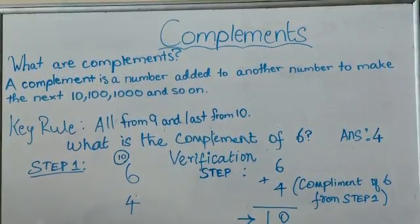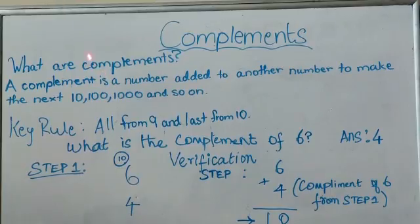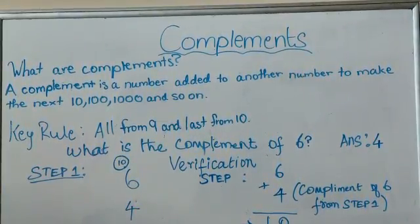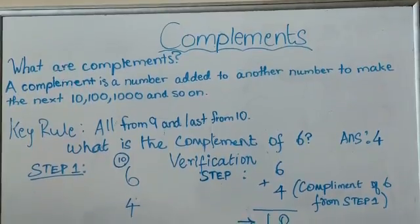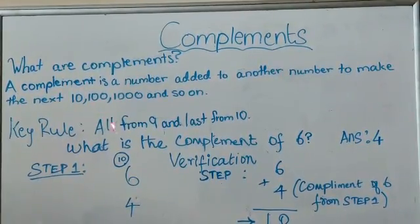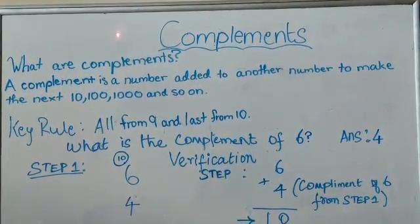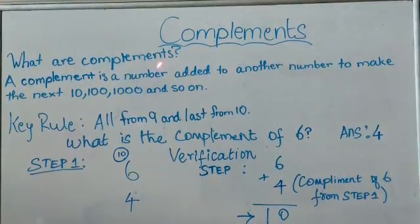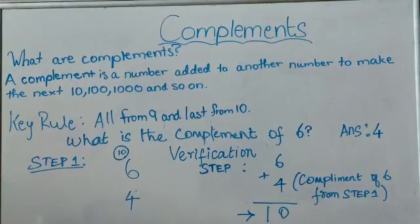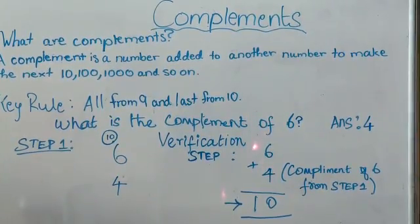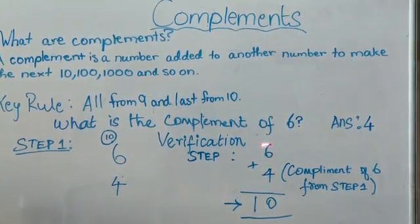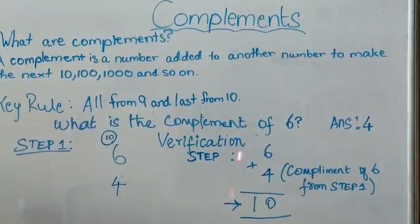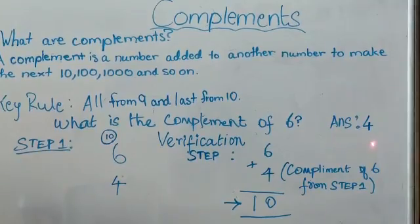Key rule: all from nine and last from ten. First, what is the complement of 6? Step one. You do ten minus six which equals four. To check your answer, just add them up. Six plus four equals ten. So the complement of six is four.